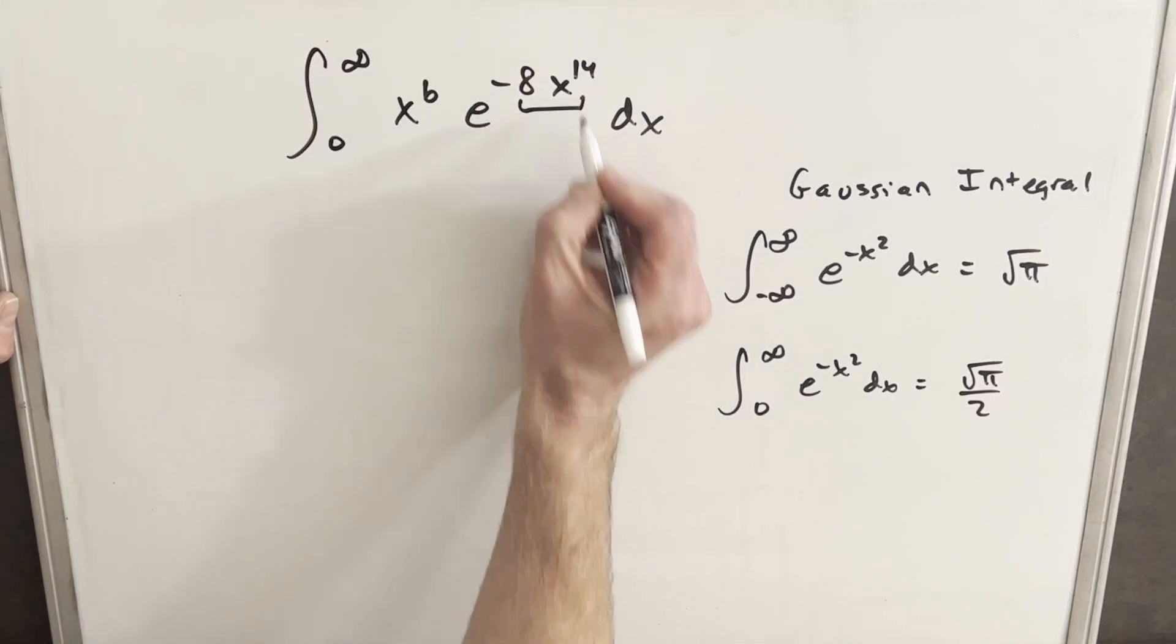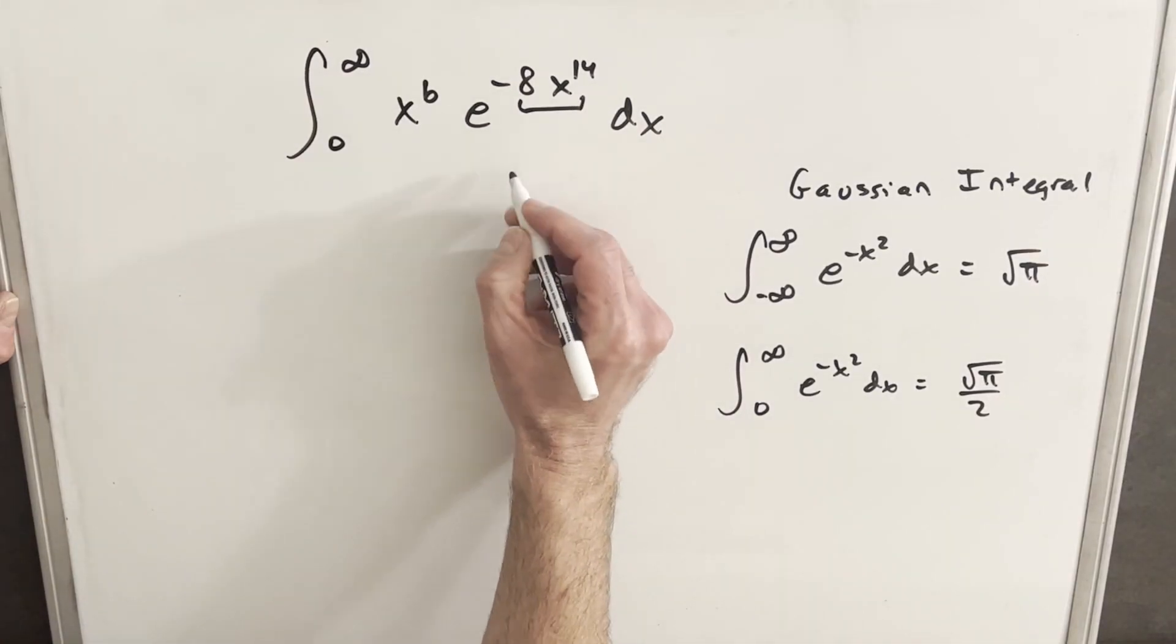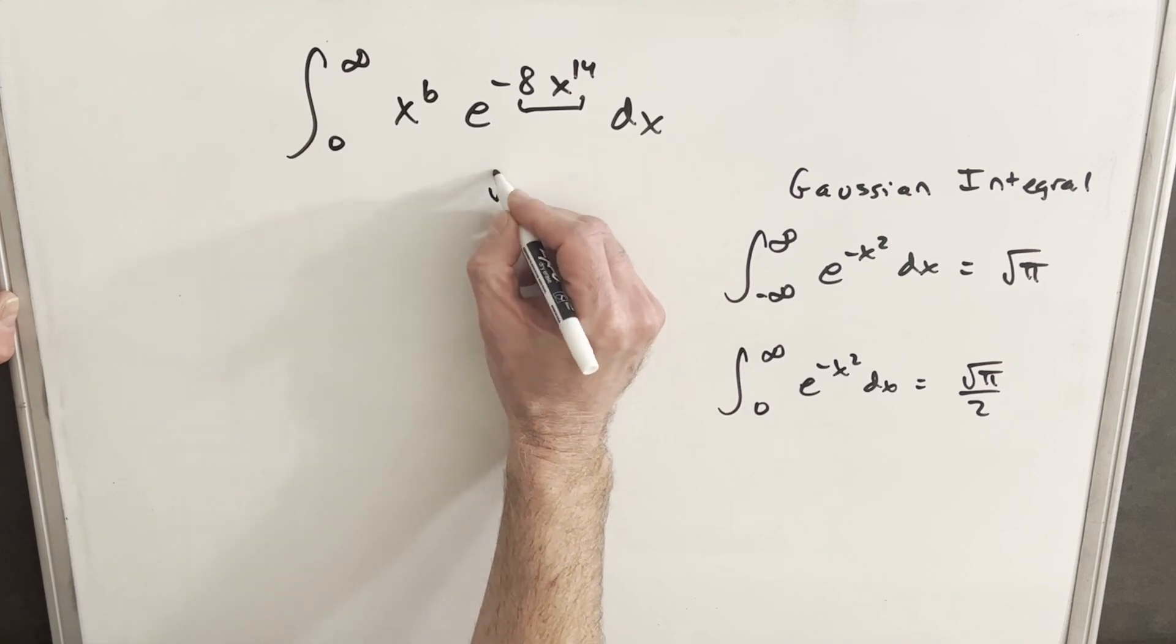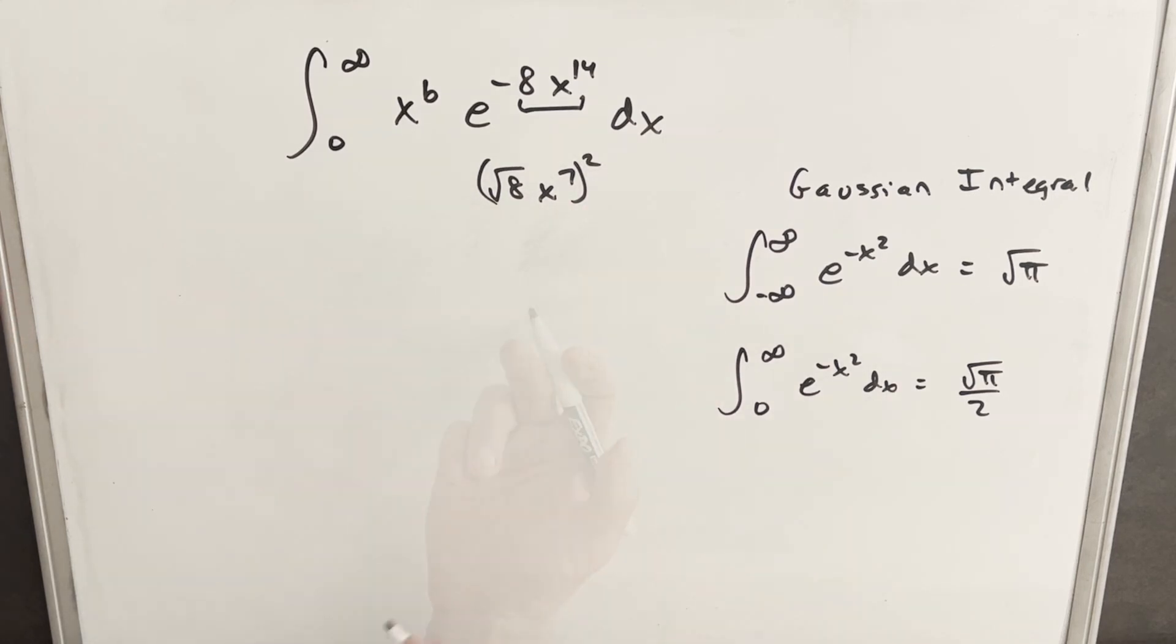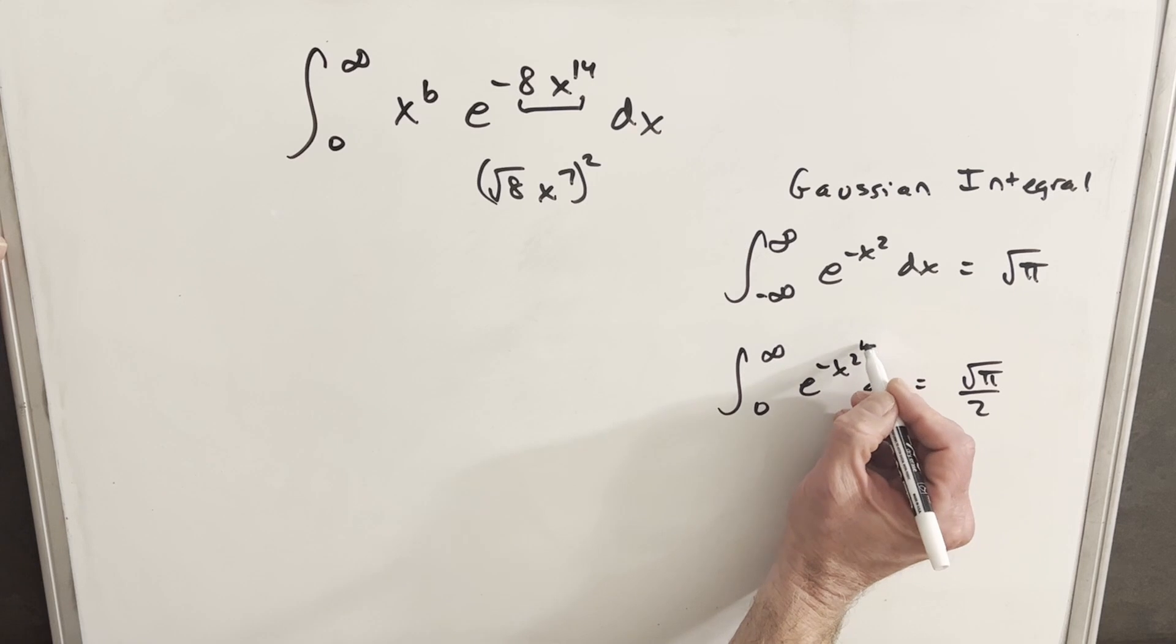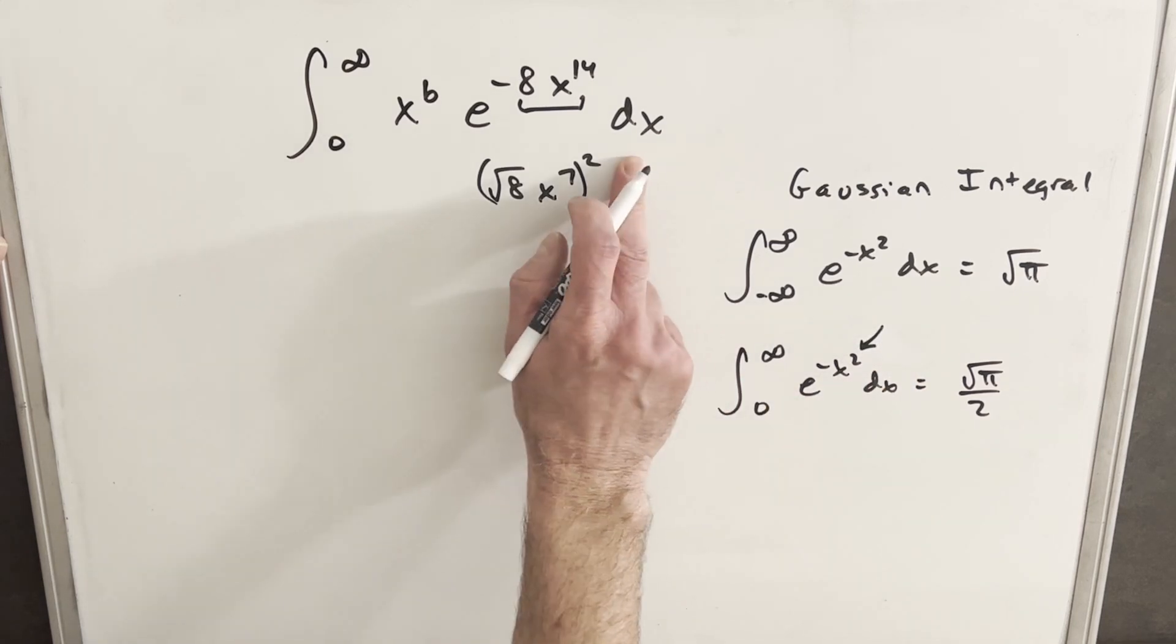And the first thing I want to do is take this exponent and what I'm going to do, instead of having it as 8x to the 14th, I'm going to write it as square root of 8 x to the 7th squared. And the reason I'm doing this is because this formula over here has a square, so I'm going to just kind of try to force that to happen and now we're creating that square term.